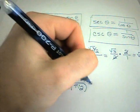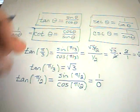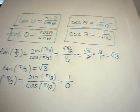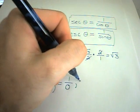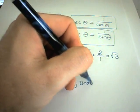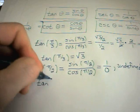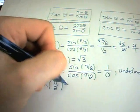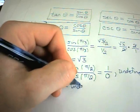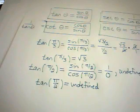So sine of pi over 2 is 1. Cosine of pi over 2 is 0. But now we're dividing by 0. And remember, in mathematics, that is bad. You can't divide by 0. So we say that this is undefined. So tangent of pi over 2 is going to be undefined. And we'll talk about the graphs of these in another video. But you'll find that tangent has an asymptote at pi over 2.